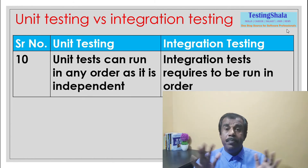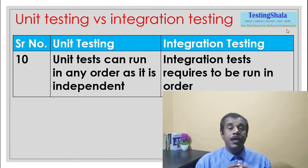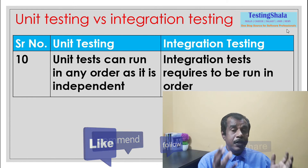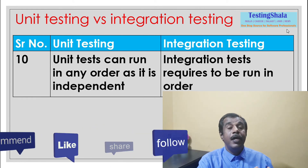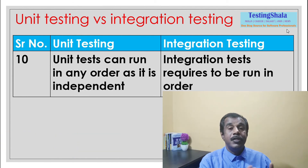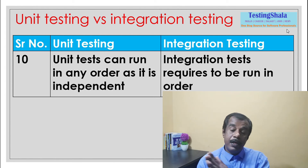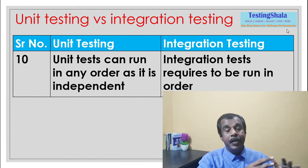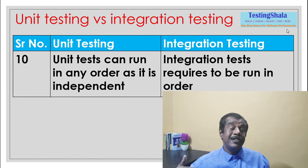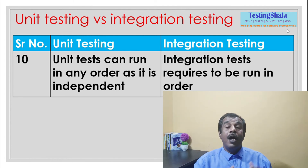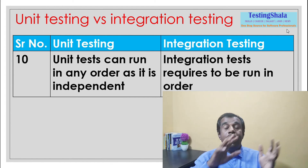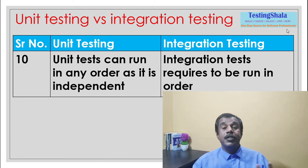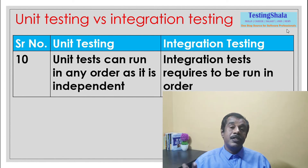The tenth important difference is that in unit testing all test cases are independent — there is no dependency between them, and you can execute any test case separately. But in integration testing, you must execute test cases in a particular order because there are dependencies and a flow of data between one module and another. Many integration aspects mean the test cases must follow a defined order.